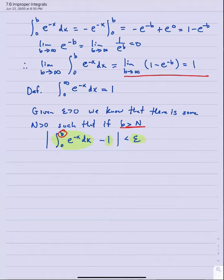In the following sense: given any small epsilon > 0, we know there is some large N such that if b > N, then the integral from 0 to b of e^(-x) dx minus 1 is less than epsilon. This means we can make the value of this definite integral as close to 1 as we like by making the upper limit sufficiently large — which is what this limit tells us. We can now give meaning to an integral where one of the limits is infinite.